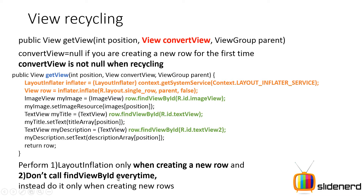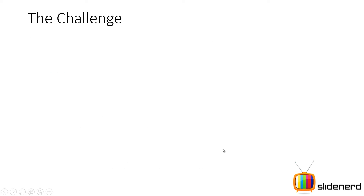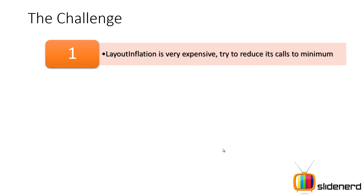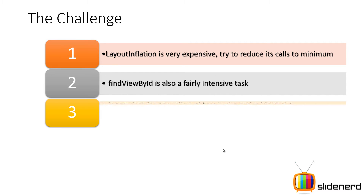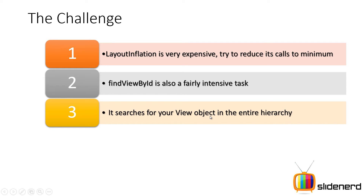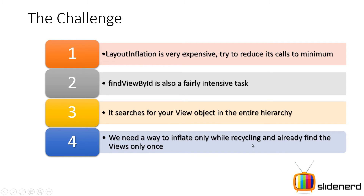Another thing: don't call findViewByID every time, because findViewByID means you are going to traverse your view hierarchy, find the appropriate object, load the parameters into Java and get this reference — and that is a lot of work. So again, do it only when creating new rows. The two challenges to make the code faster: Number 1, layout inflation is very expensive, try to reduce the number of calls to a minimum. Number 2, findViewByID is also an expensive task because it searches for your view object inside the entire view hierarchy, just like a tree view visible in the hierarchy viewer inside Eclipse or Android Studio.